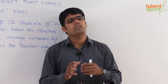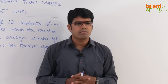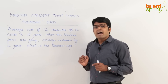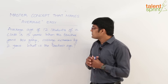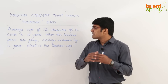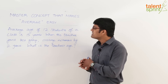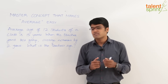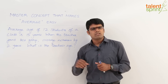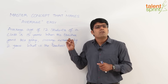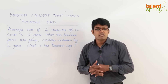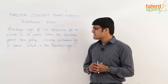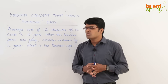With this idea of equal distribution, solving questions from this topic becomes really very simple. Let's look at an example. The question says: the average age of 12 students of a class is 15 years. When the teacher joins the group, the average increases by two years. What is the teacher's age? This is one of the most popular models from averages asked in competitive exams.